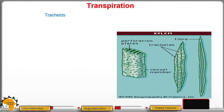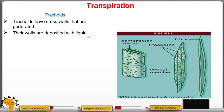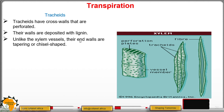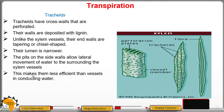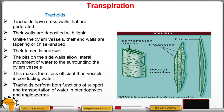The tracheids are fiber-like structures with cross-walls that are perforated. Their walls are also deposited with lignin for strengthening. Unlike xylem vessels, their end walls are tapering or chisel-shaped, and the lumen is narrow. Pits on the side walls allow lateral movement of water to the surrounding xylem vessels, making them less efficient than vessels in conducting water. Tracheids perform both support and water transportation functions in pteridophytes and angiosperms.